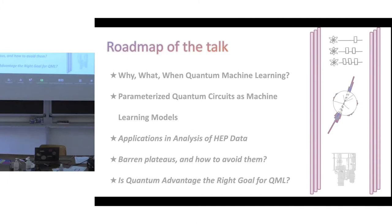This also complements what you already learned in Peter's and Leonardo's talk this week on variational circuits. I will briefly introduce some applications of QML parametrized quantum circuit-based models in the analysis of classical HEP data, then briefly discuss techniques to avoid barren plateaus. Finally, motivated by Monday's talk — Davide's lecture — I'll discuss whether quantum advantage is the right goal for quantum machine learning.